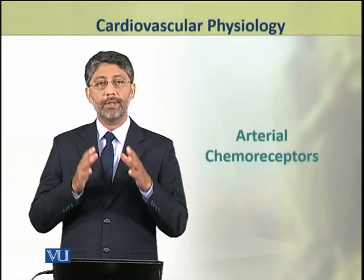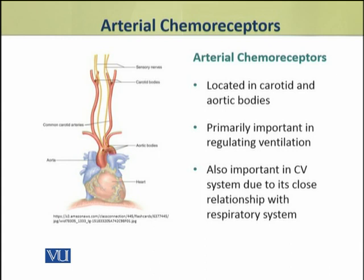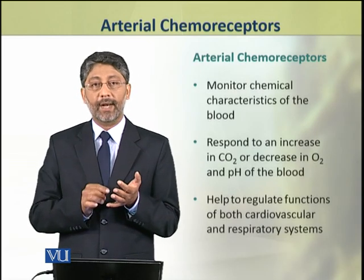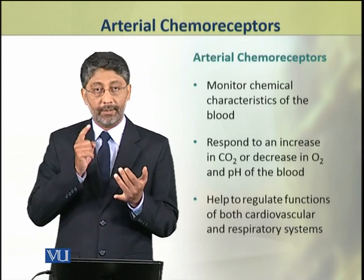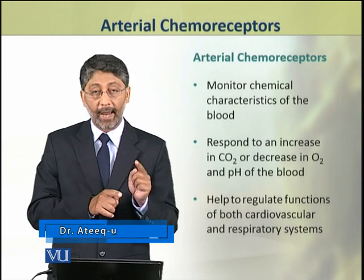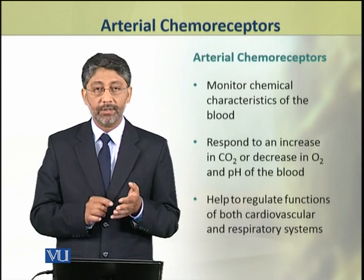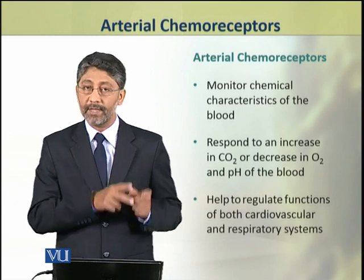In this topic we shall discuss the arterial chemoreceptors in detail. The arterial chemoreceptors are located in the carotid and aortic bodies. They are primarily important in regulating ventilation — that is, breathing rate — but they are also important in the cardiovascular system due to its close relationship with the respiratory system. The arterial chemoreceptors monitor chemical characteristics of the blood, responding to an increase in carbon dioxide concentration or a decrease in oxygen level and pH level of the blood. They help to regulate the functions of both cardiovascular and respiratory systems.